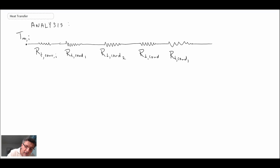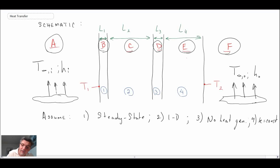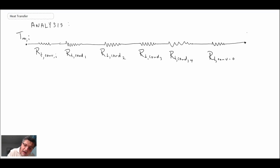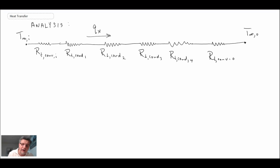Finally, we have convective heat transfer on the outer surface, giving R_t,convection,o. Just as with voltage in a circuit, here we have a temperature drop, ending at t-infinity outer. Heat flux qx flows in this direction — that's what we're after. A nice feature of thermal resistances is that once you solve for qx, you can also find intermediate temperatures.